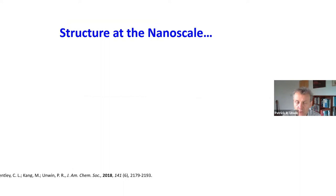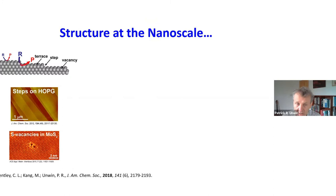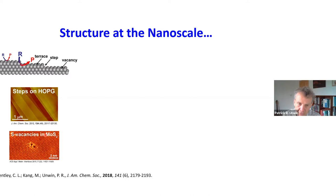Here's the basic idea. If we look at any kind of electrode that we might want to study — whether it's a very well-defined electrode, a layered material like highly oriented pyrolytic graphite — these surfaces still have defects which may contribute to the electrochemical activity or may have different activity to the surrounding basal surface.